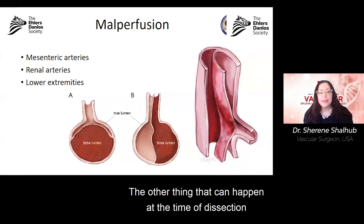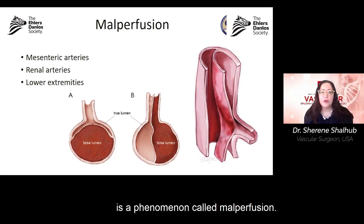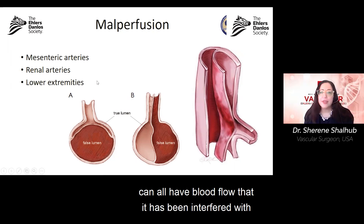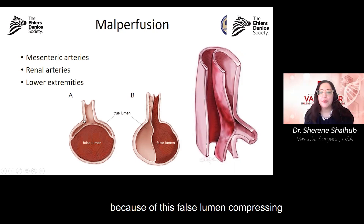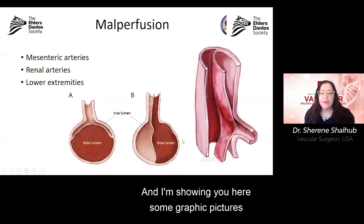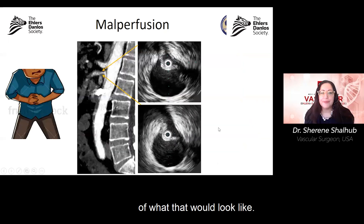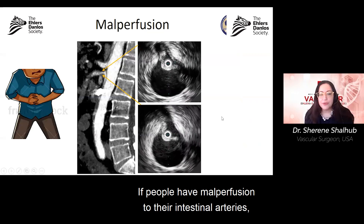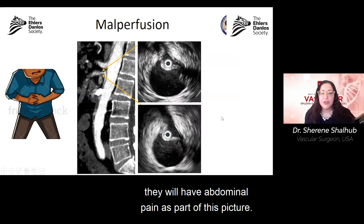Another thing that can happen at the time of dissection is a phenomenon called malperfusion. This is where the mesenteric arteries, renal arteries, and lower extremity arteries can all have blood flow interfered with, because the false lumen compresses the origin of these arteries. If people have malperfusion to their intestinal arteries, they will have abdominal pain as part of this picture.